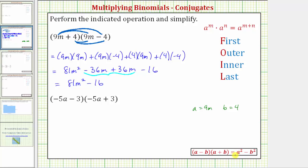So notice how the product would have to be equal to a squared minus b squared, which would be the square of 9m, minus the square of 4. And notice how we do get 81m squared minus 16, using the formula as well.